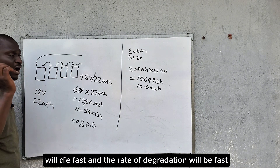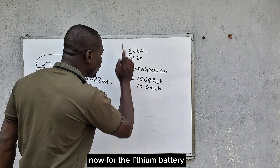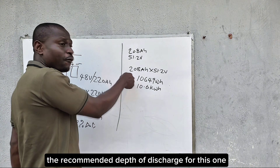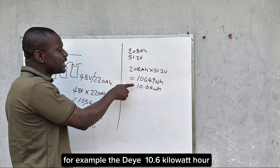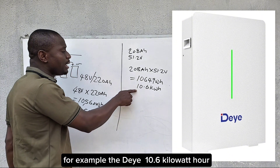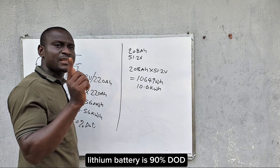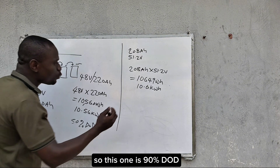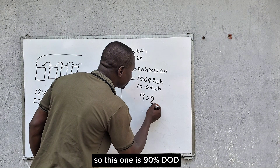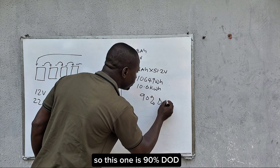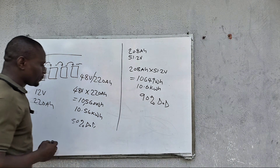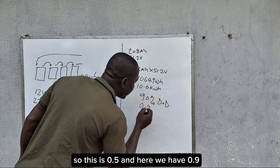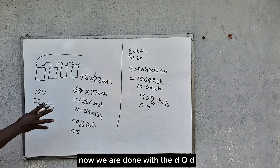For the lithium battery, the recommended depth of discharge for this 10.6 kilowatt hour lithium battery is 90% DoD. So we are now seeing the difference: the lead acid is 0.5 and the lithium is 0.9.